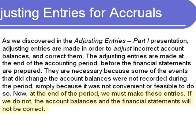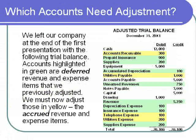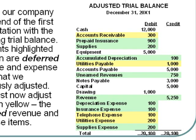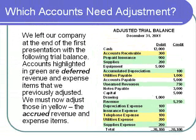If we don't, the account balances and the financial statements will not be correct. The adjusted trial balance displayed on this slide is the one that we left our company with at the end of the previous presentation. The accounts highlighted in green are the accounts that were adjusted in that presentation, and those in yellow are the accounts that we will adjust in this presentation. In the process of making adjustments for the accrued revenue and expense items, we will also be adding a few new accounts with balances to this trial balance.